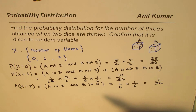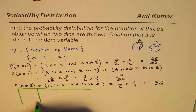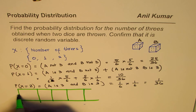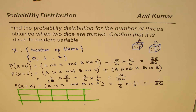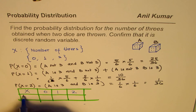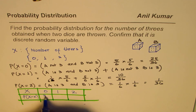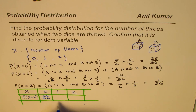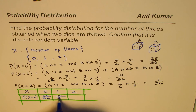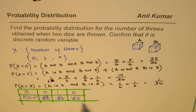Now we can present the probability distribution in the form of a table. The possible values of the random variable X are 0, 1, and 2. For X = 0, the probability is 25/36 — the highest probability and the mode. For X = 1, it is 10/36. And for X = 2, it is 1/36.